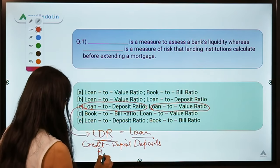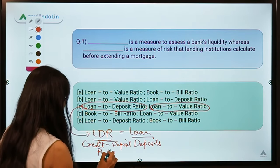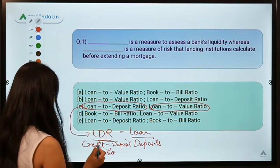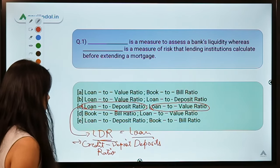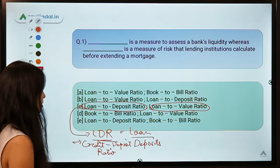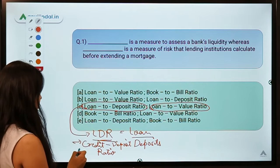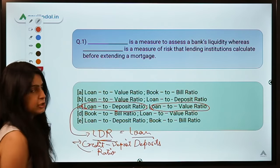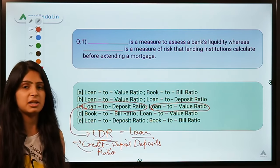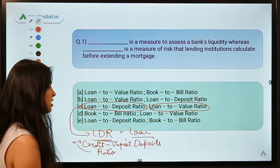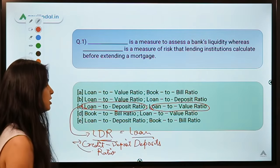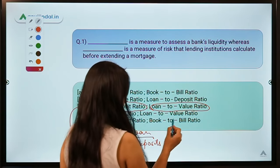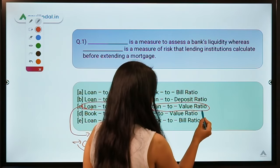LDR is also called the Credit Deposit Ratio — simply substituting 'credit' for 'loan.' This ratio was recently discussed in a Mint article, but it is nothing but the Loan to Deposit Ratio.